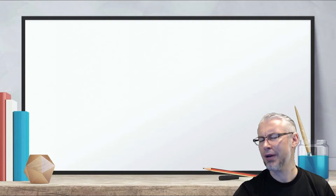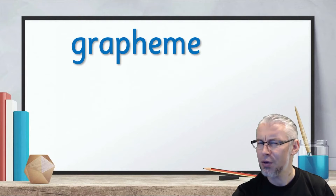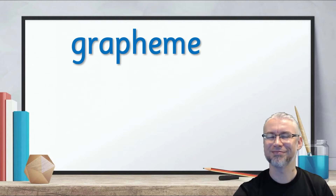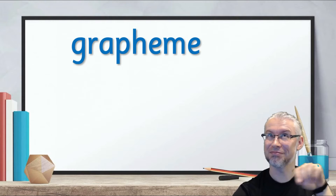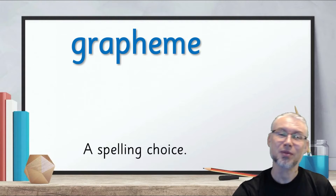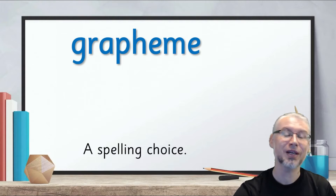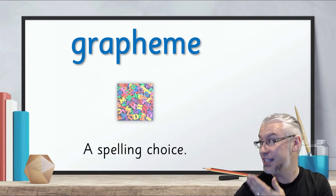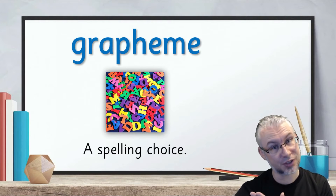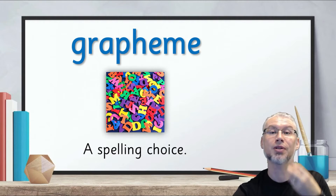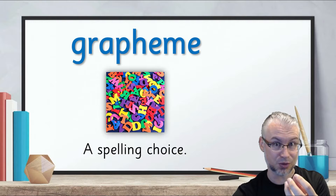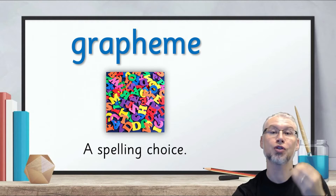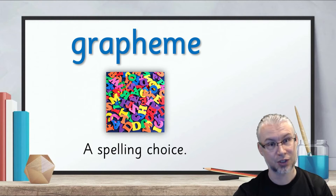What about a grapheme? Can you remember what is a grapheme? That's right. A grapheme is a spelling choice — the different letters that we use to represent sounds. So we have different letters to show the sounds in English.